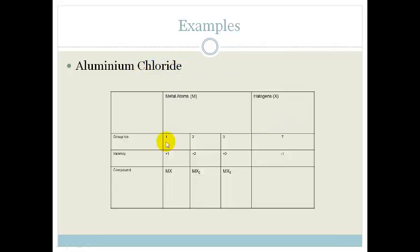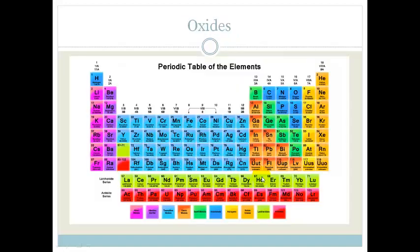So if we go back to our table, we are looking at aluminum which is in group 3. And we are looking at chlorine which is group 1. So we can see that it's got to be 1 aluminum and then it's Cl3. So it's aluminum chloride.